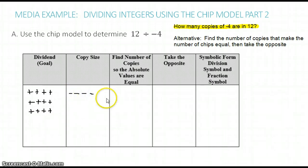Now if we begin to take copies of negative 4, we won't be able to get positive CHIPs. So here's our alternative. We're going to find the number of copies that make the number of CHIPs equal, or the absolute value. Then we're going to take the opposite.